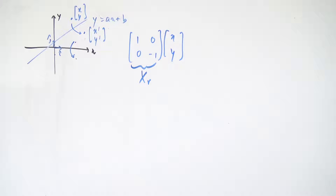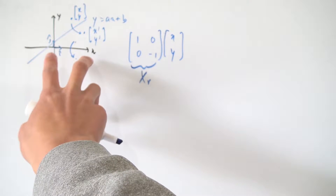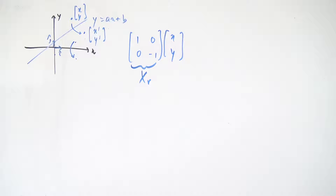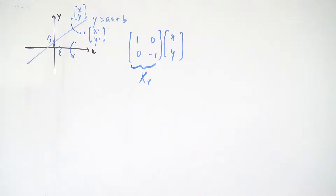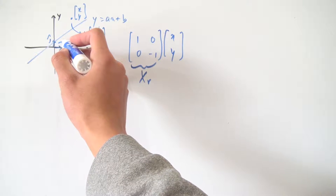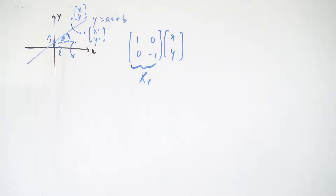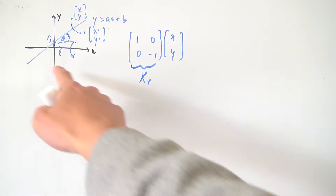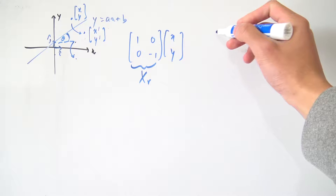It would be nice if we can think of some transformation that moves this whole linear line and puts it onto the x axis, because then we can use the matrix Xr to do a reflection and then move everything back. You can see that this line is tilted by some angle theta, so it's a good idea to use a rotation matrix to rotate everything so that the line is parallel to our x axis.